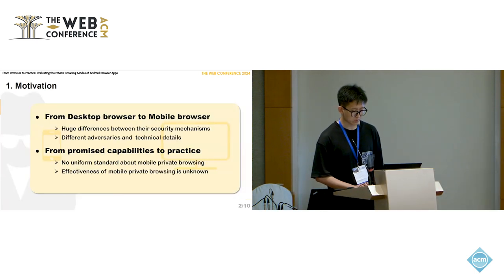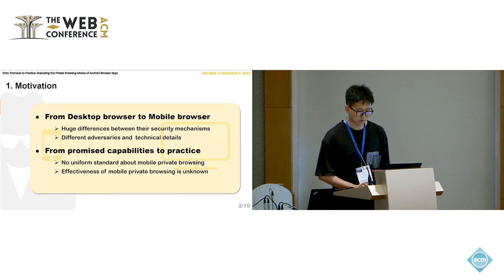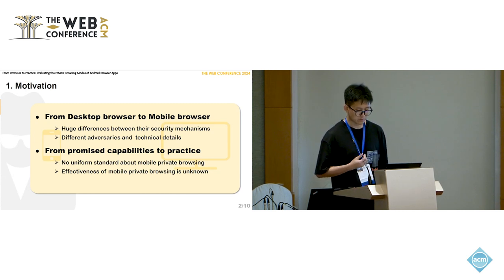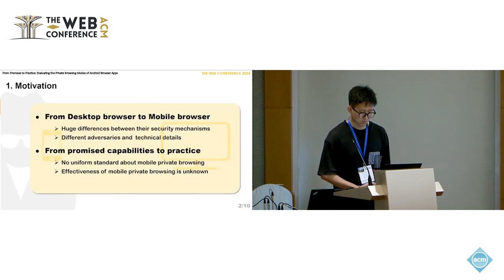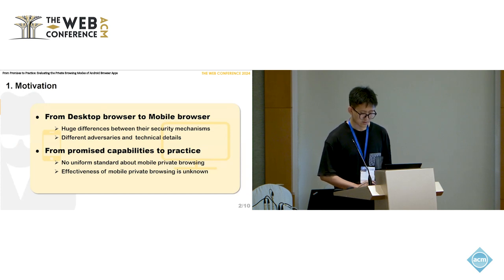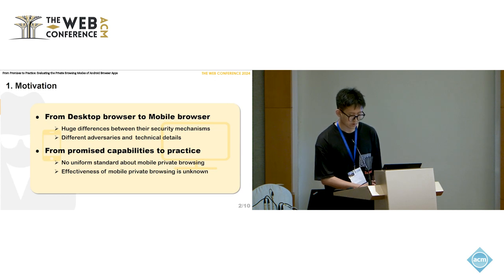However, the implementation of private browsing on the mobile platform remains under-evaluated. While PC private browsing is well discussed, its security mechanisms don't directly apply to the mobile platform due to threat model differences and system differences. Furthermore, the lack of a uniform standard for mobile private browsing complicates systematic evaluation, and the effectiveness of features promised by developers is often untested. Therefore, our work aims to fill the gap of evaluating the effectiveness of mobile private browsing.